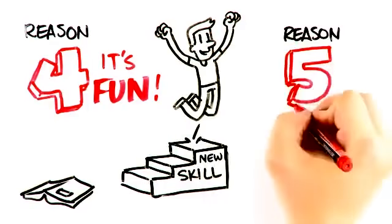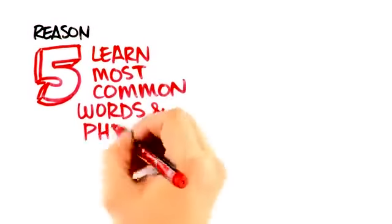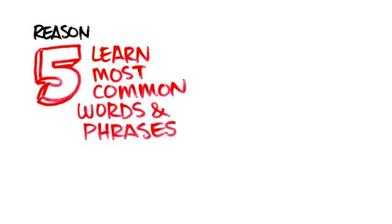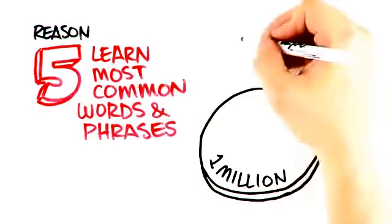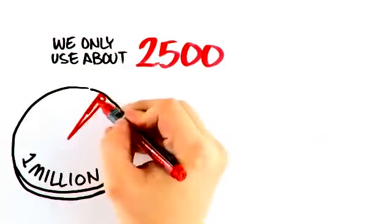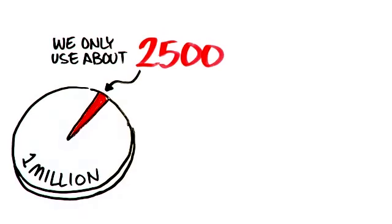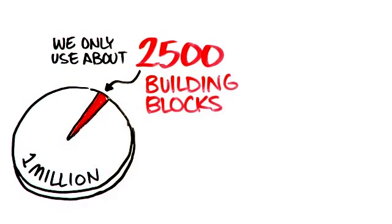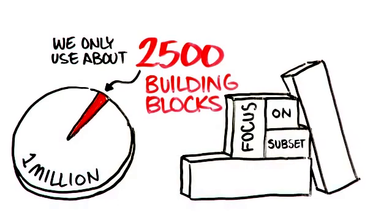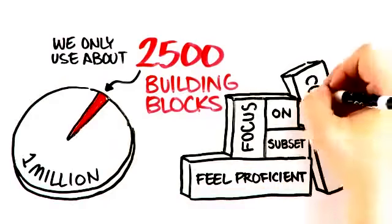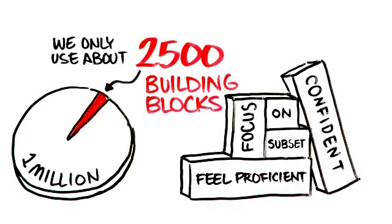Reason number five. Learn the most common words and phrases. Can you believe the English language has over one million words and phrases? In English and in most languages, we only use about 2,500 words and phrases, what we call building blocks, in everyday conversation. If you only focused on even a subset of these building blocks, you'd feel proficient and confident speaking a language. That's exactly what the Pimsleur approach does.